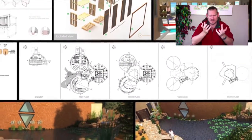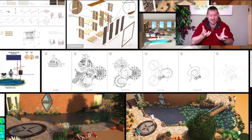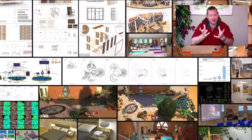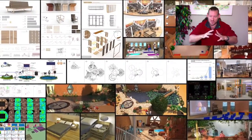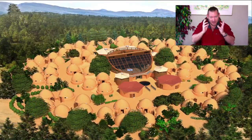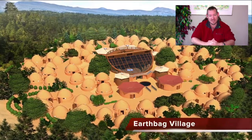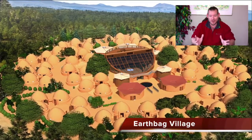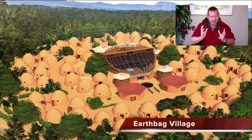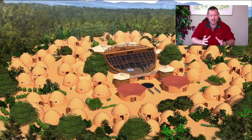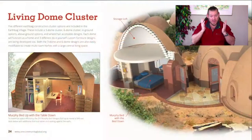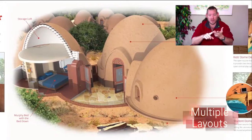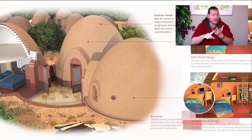Ecology is the relationship of organisms to each other and to their physical surroundings. Open source community ecology is really what we're creating. In the background you can see the duplicable city center as well as seven different sustainable village models that we are designing as self-replicating teacher demonstration hubs that can be built around the world.